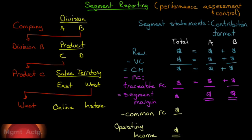We're beginning chapter 11, and our first learning objective is segment reporting. To visualize what a segment is, consider what I've done on the left side of the screen here. I have a company that has two divisions, Division A and Division B. The company can generate a report for Division A, one for Division B, and one for the company as a whole. It can also take Division B and break it out into the two products that Division B produces, Product C and Product D.